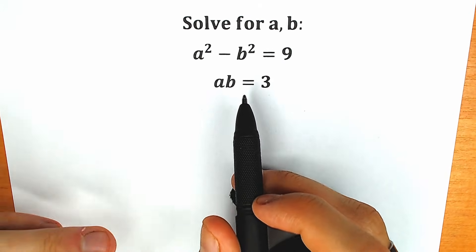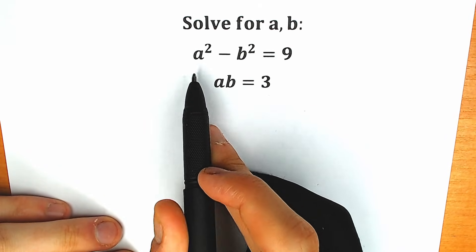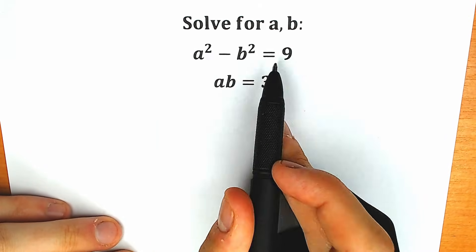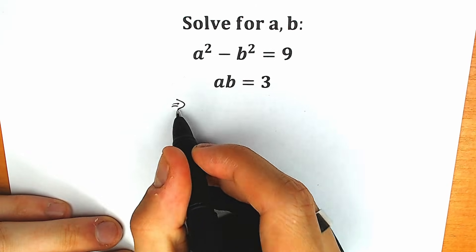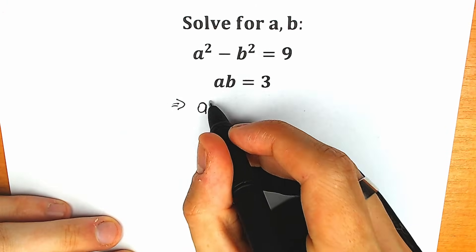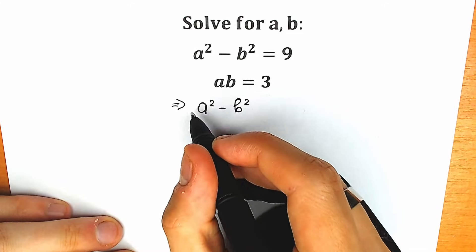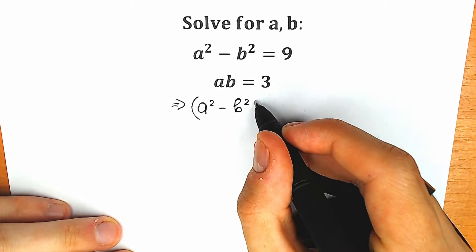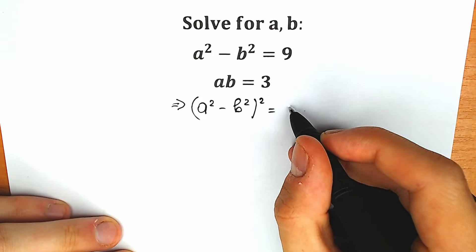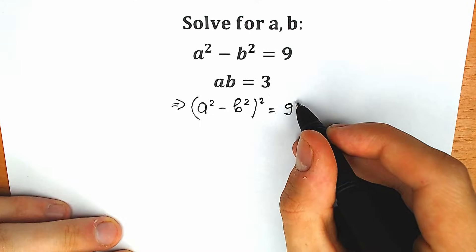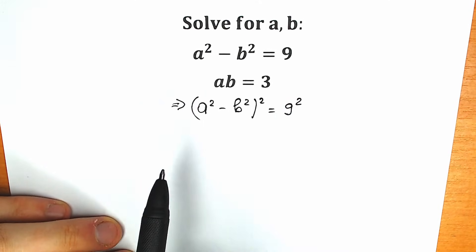So how can we solve this question? First of all, we have the first equation and the second equation. Let's raise the first equation to the second power on both sides. So as a result, we have a squared minus b squared raised to the second power equal to 9 to the second power. We just raised the first equation to the second power.